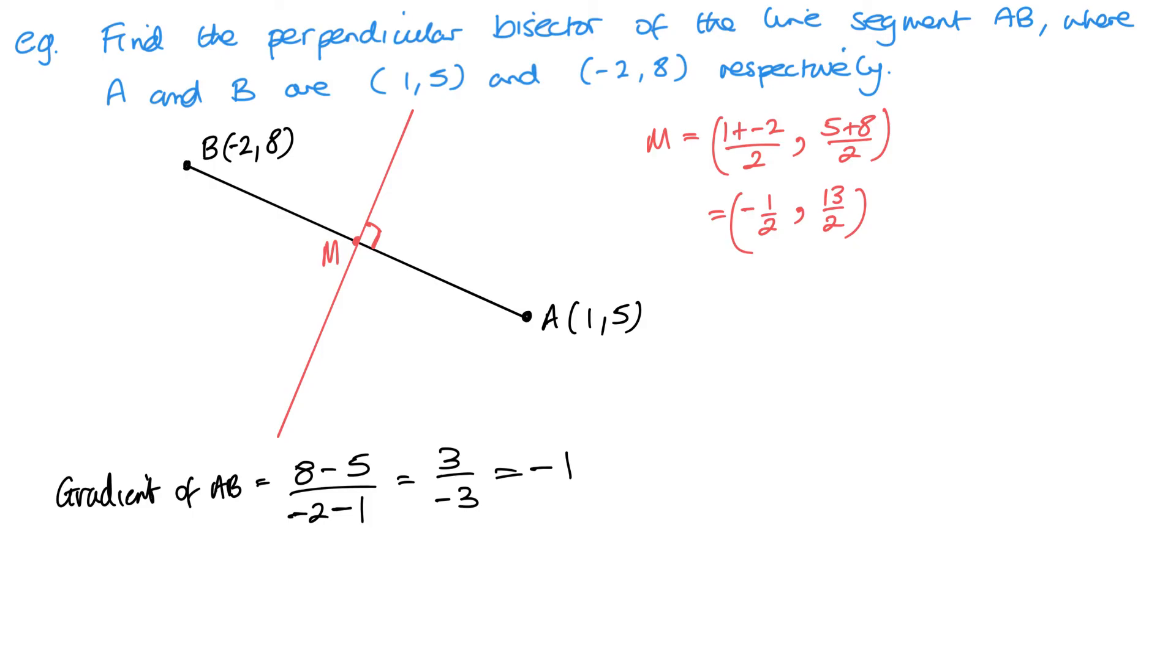That, therefore, means that the gradient of my perpendicular line is going to be 1 divided by this minus 1, and then change my signs. So, it's actually going to be positive 1. Just remember that this is 1 over m, and change your sign.